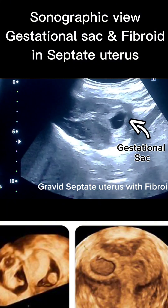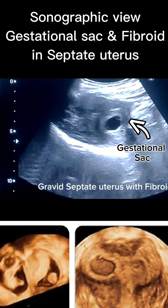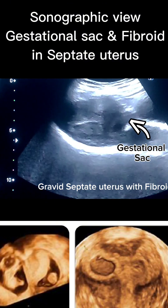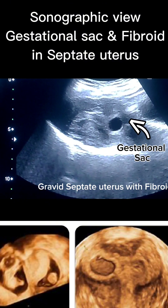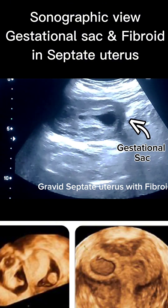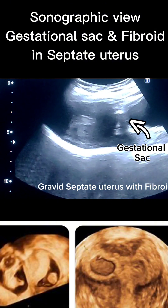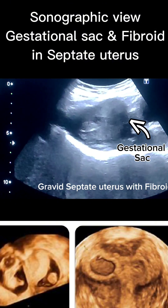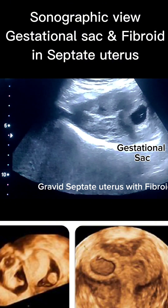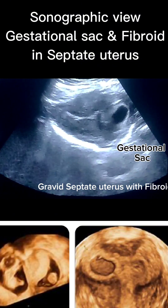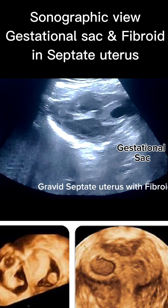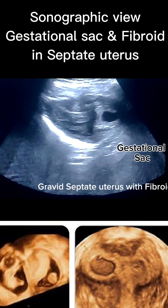The gestational sac appeared oval-shaped, surrounded by a healthy decidual reaction. A yolk sac is visualized and a fetal pole is also seen, measuring consistent with 6 weeks gestation. However, no fetal cardiac activity was noted at this stage.